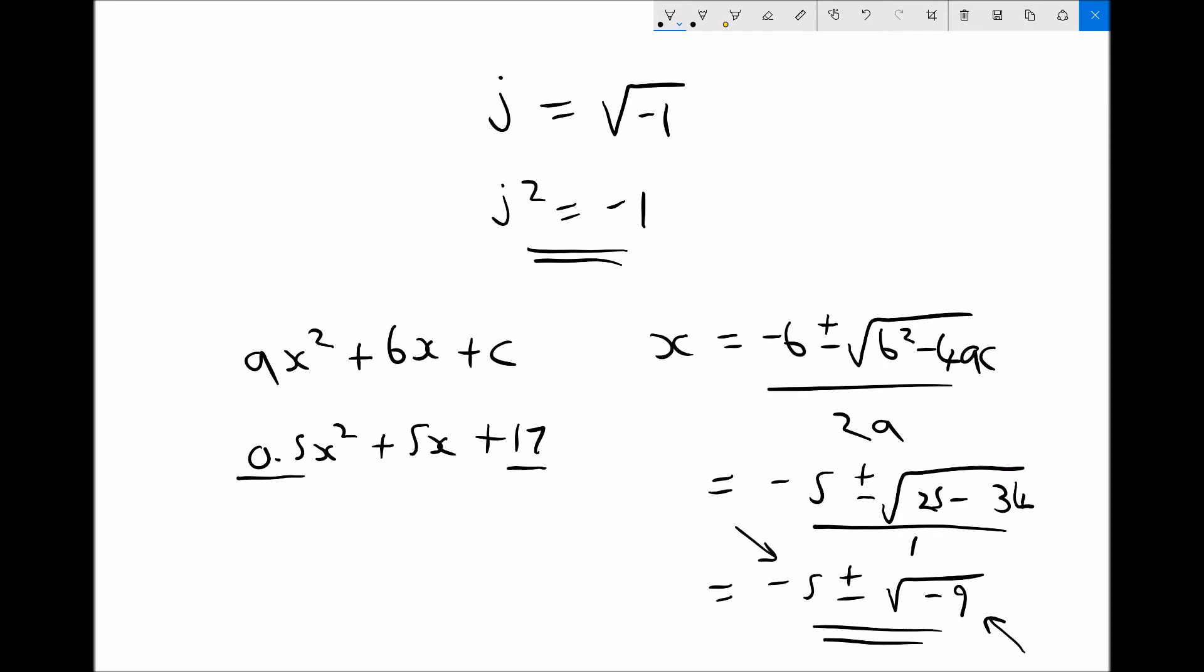So now we know what an imaginary number is, root minus 1, root minus 9, and we know what a complex number is, a number with a real and an imaginary component.